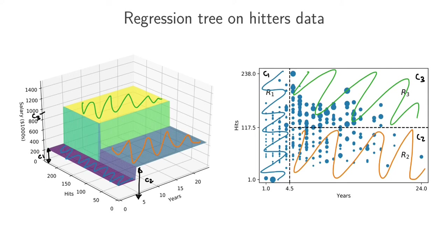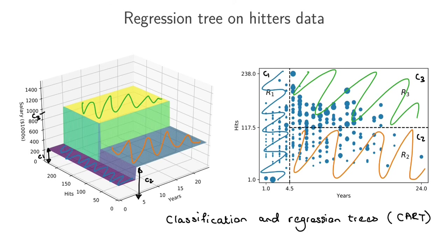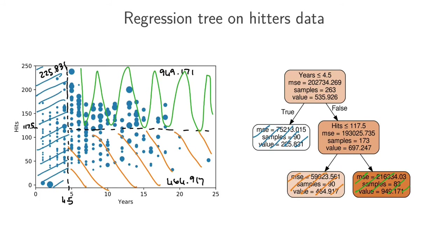Very often in textbooks, decision trees and regression trees are referred to together as Classification and Regression Trees, or just CART. To be precise, when I say decision trees I'm specifically talking about classification, and when I say regression trees I'm talking about regression — though sometimes the terminology gets mixed up in textbooks as well.